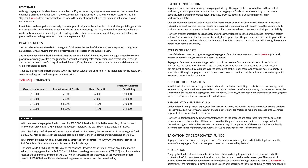The cost of the guarantees. In addition to the costs incurred by mutual funds, such as sales fees, switching fees, trailer fees, and management expense ratios, segregated funds have added costs related to death benefits and maturity guarantees. Assessing the true value of the insurance in segregated funds is not easy. Certainly, the management expense ratios for segregated funds are higher than those of comparable mutual funds.